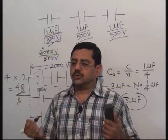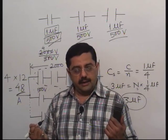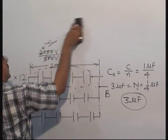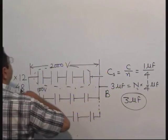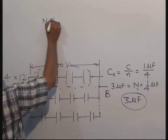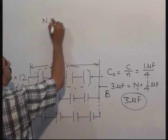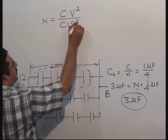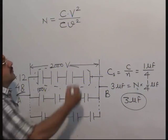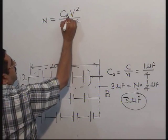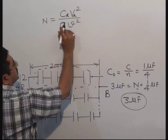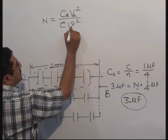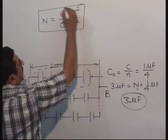For each and every question you should be able to apply this method. Now, what is the shortcut? Look at the board carefully. The shortcut formula is C_required × V_required² divided by c_single × v_single². Here, C_required is the required capacitance, V_required is the required voltage, c_single is the capacitance of a single capacitor, and v_single is the maximum voltage that can be applied across a single capacitor.